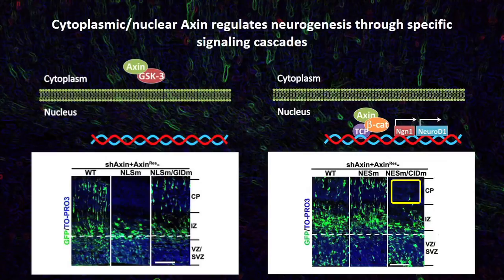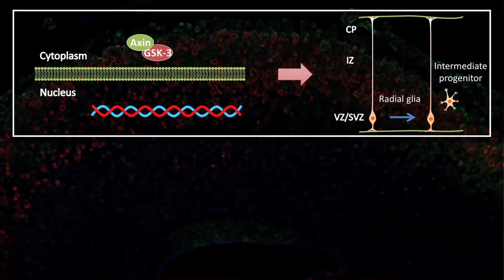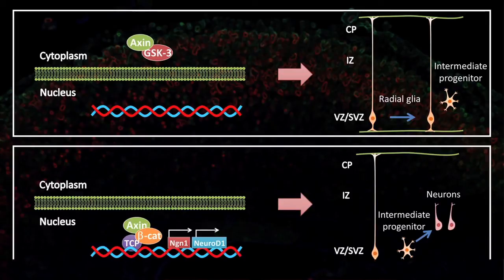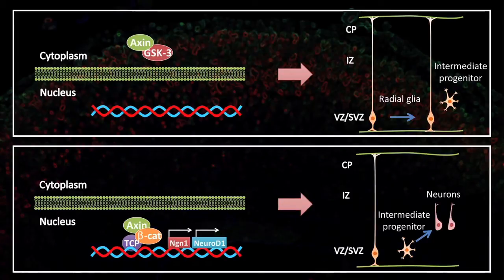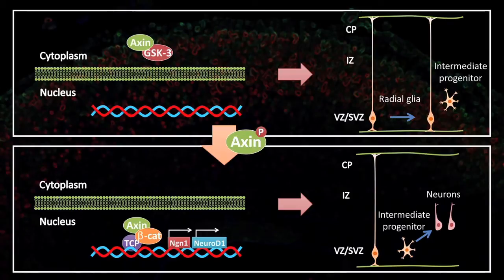In summary, we show that subcellular pools of axin bind to distinct regulators to coordinate the transition of intermediate progenitors from amplification to neuronal differentiation. The precise control of these signaling processes ensures the production of the proper number of neurons. Since both GSK3 and beta-catenin are converging points for multiple signaling processes during neurogenesis, we suggest that axin phosphorylation is a master switch controlling these processes. Therefore, orchestrated amplification and differentiation of intermediate progenitors governs the evolutionary expansion of the cerebral cortex.